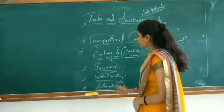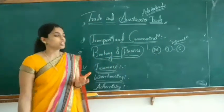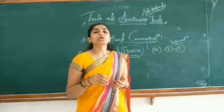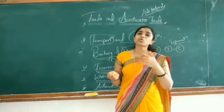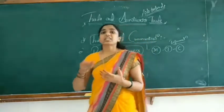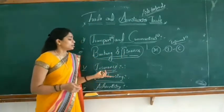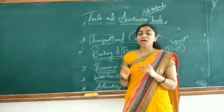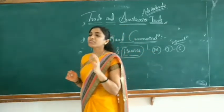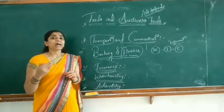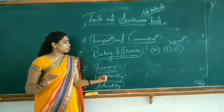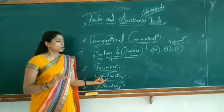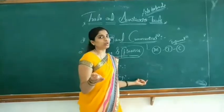The next one — warehousing — is very essential because it creates time utility. Until demand is created, goods are stored in a warehouse or godown. The warehouse provides facilities and activities which protect the goods. Whenever demand is created, the goods move from the godown stock to ultimate users or the market.